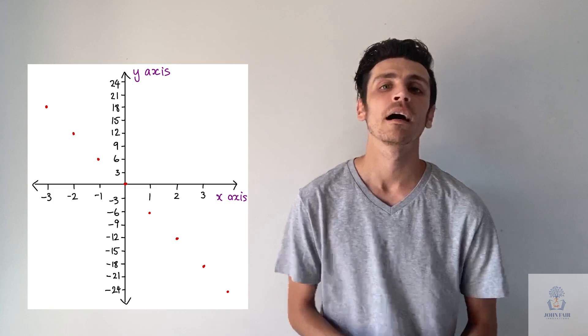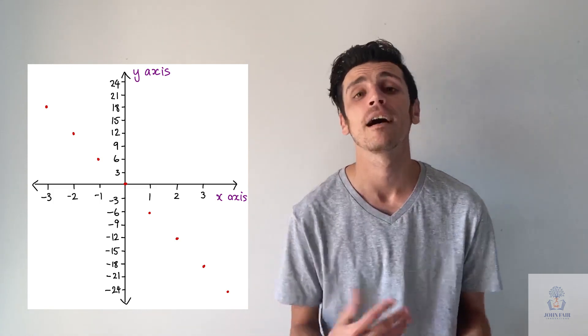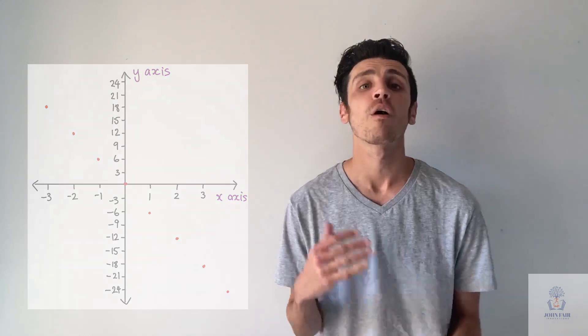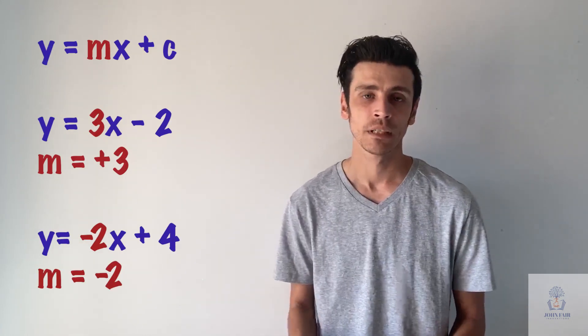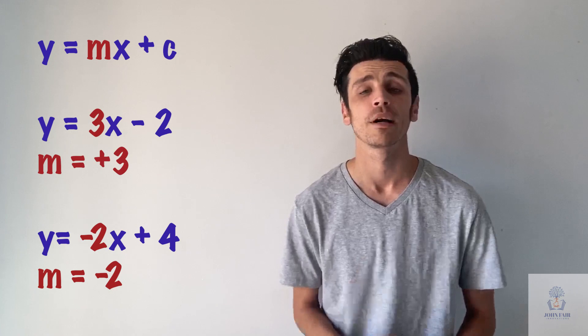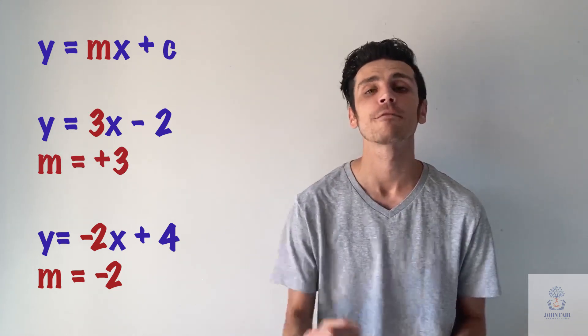So this is what our gradient does. Every time we go across 1 along our horizontal line, our x-axis, we have to go up or down depending on what our m value is. And we can work out our m value by simply looking at the number before the x. And it doesn't have to be a whole number, it can be a decimal and it can be a fraction. It's just whatever that number is in front of your x.